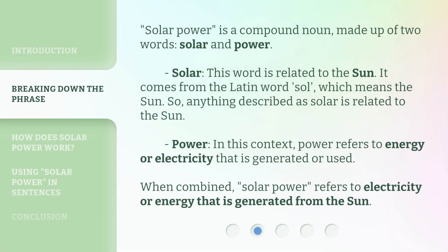Solar power is a compound noun made up of two words: solar and power. Solar — this word is related to the sun. It comes from the Latin word 'sol,' which means the sun. So, anything described as solar is related to the sun. Power — in this context, power refers to energy or electricity that is generated or used. When combined, solar power refers to electricity or energy that is generated from the sun.